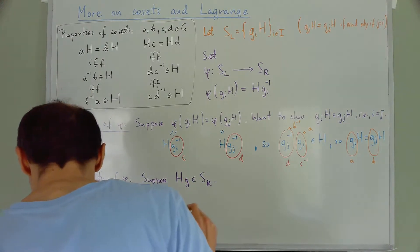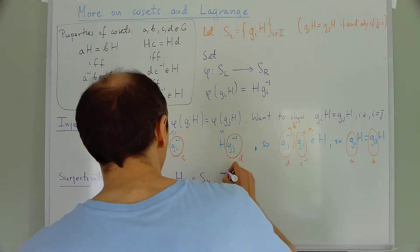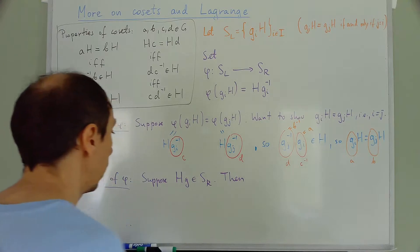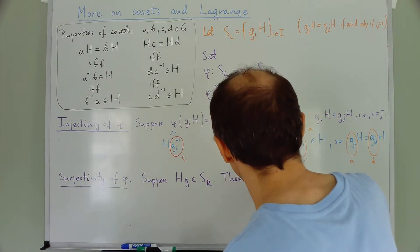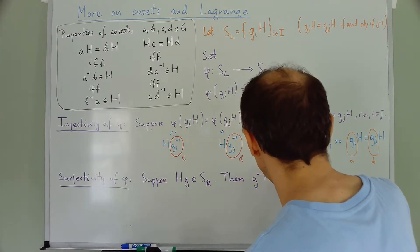Then if I just look at G inverse H, then this is a left coset.